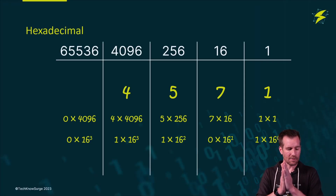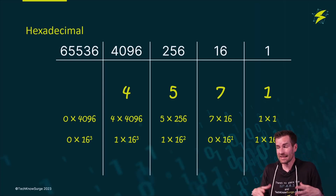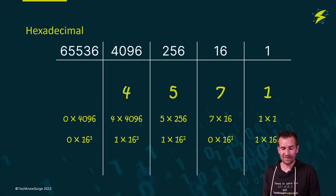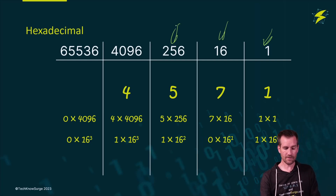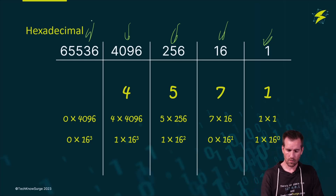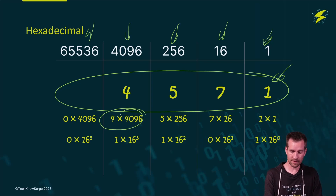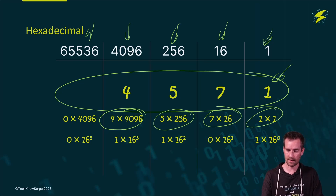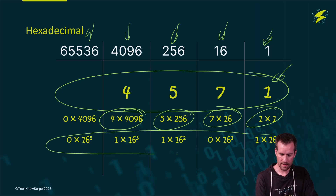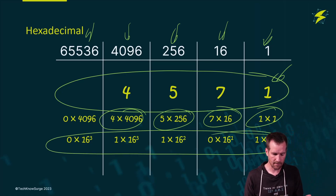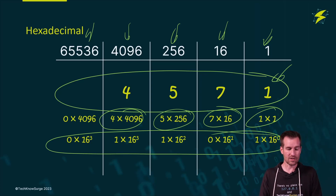I have a whole module going over hexadecimal numbers in depth, but I just wanted to point out that hexadecimal works the same way. It's base 16, so it looks a little different and can be confusing at first, but it's really the same thing. We have a ones column, a 16s column, 256, 4,096, and 65,536. To work out the example: 4 times 4,096 plus 5 times 256 plus 7 times 16 plus 1 times 1 gives the answer. We'll talk much more about that in that module.